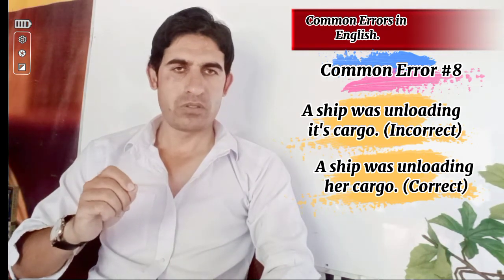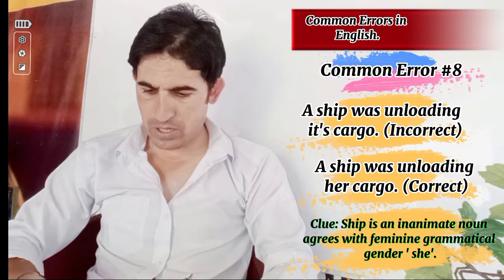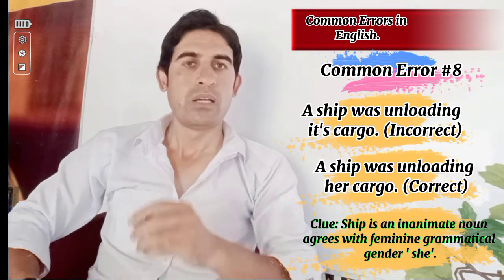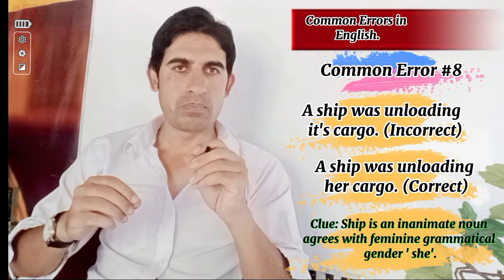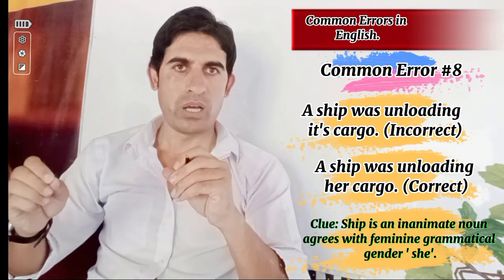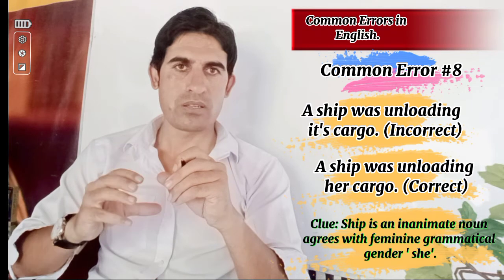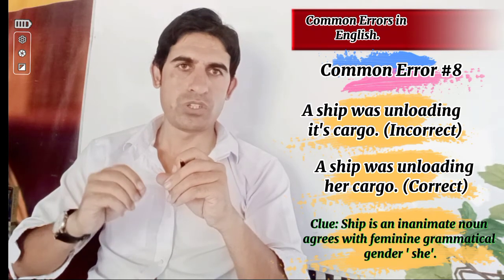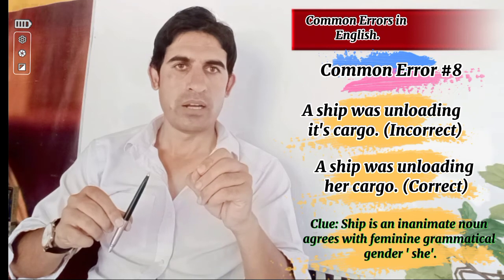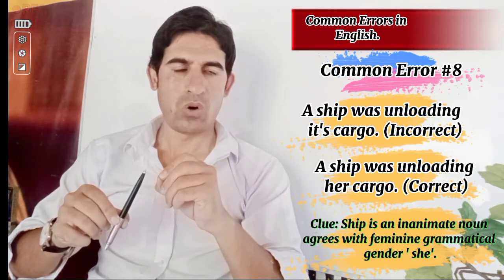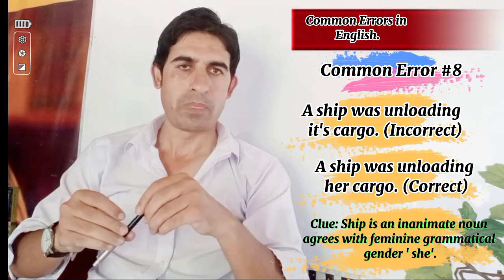To have it specifically for the incorrect sentence: 'ship' is an inanimate noun and agrees with the feminine grammatical gender 'she.' To understand that, let me give you the clue that we use the pronoun 'she' for the subject or noun within a sentence when it is inanimate. So in this case, we don't use 'its,' but we use 'she' for the ship, because the rule in grammar is that 'ship' is an inanimate noun — it doesn't refer to a living thing or have a soul — so we use 'she' as a feminine grammatical gender.